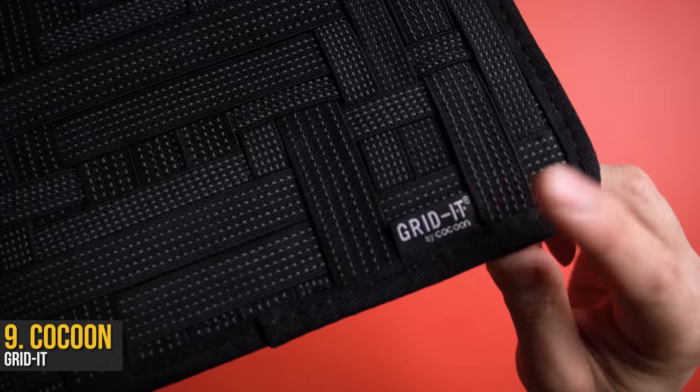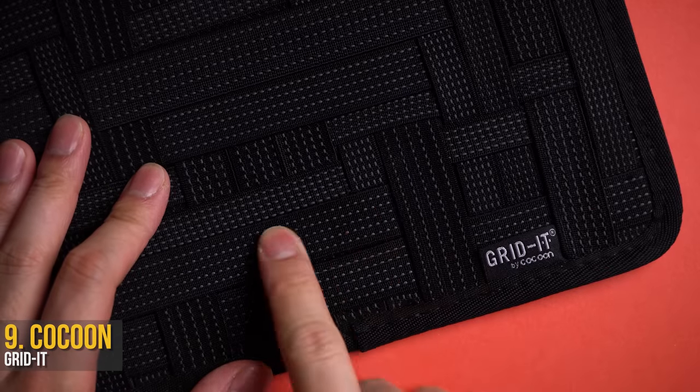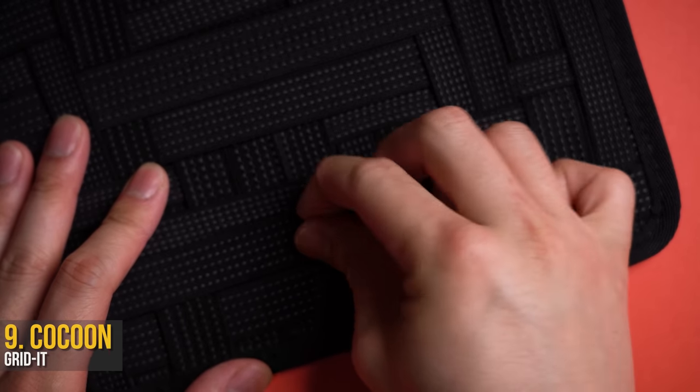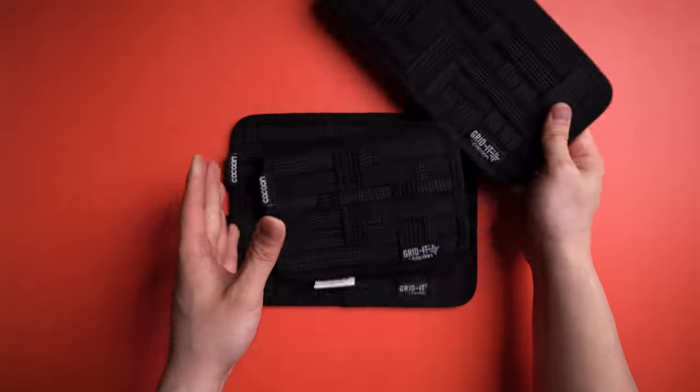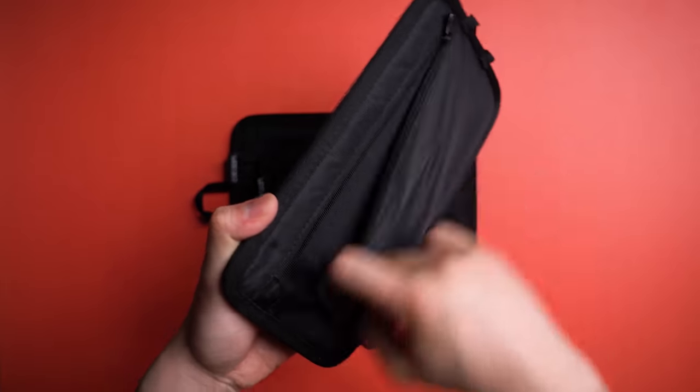The Cocoon Grid-It is literally a grid of elastic bands, which pretty much sums up the whole thing. I've got the original size here, but they do come in a variety of sizes depending on how much gear you're actually hoarding with you. Some even with additional pockets too. Very neat.